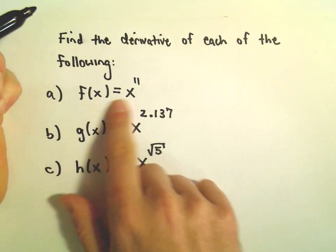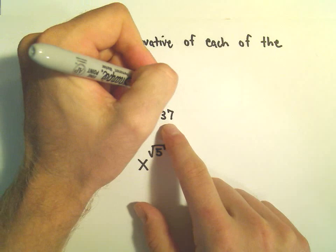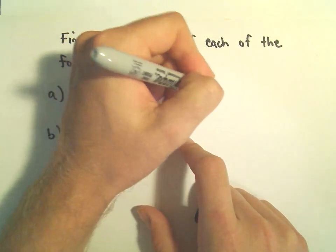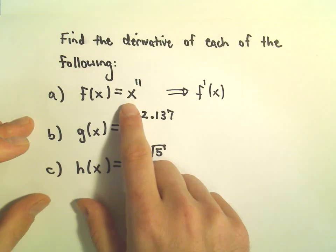I think most of the derivatives we saw in the other examples were kind of like part A. And in part A, we've got x to the 11th.